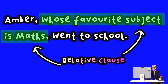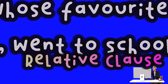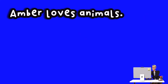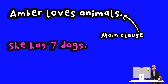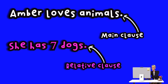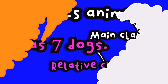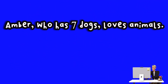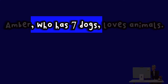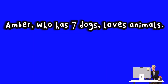Here is another example. 'Amber loves animals' is the main clause. 'She has seven dogs' is the relative clause, which is dependent on the main clause. Here is the complete sentence using the relative clause: 'Amber, who has seven dogs, loves animals.'